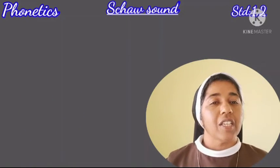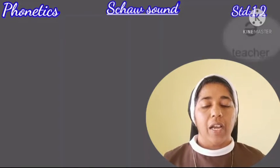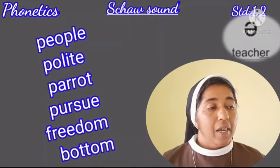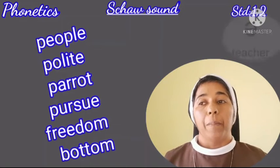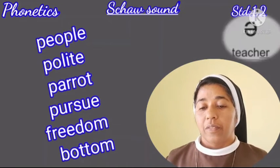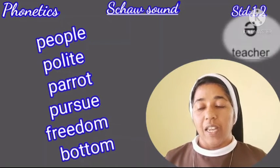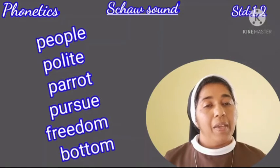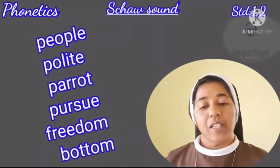Now let's look at the schwa sound in the middle of a word. 'People' — it's not 'pee-ple,' it's 'people.' By the way, do you know the difference between 'people' and 'peoples'? 'People' refers to people belonging to one nation or country; 'peoples' refers to people all over the world from different nations. In 'people' — spelled P-E-O-P-L-E — after the second P, you will see the upside-down E schwa sound.